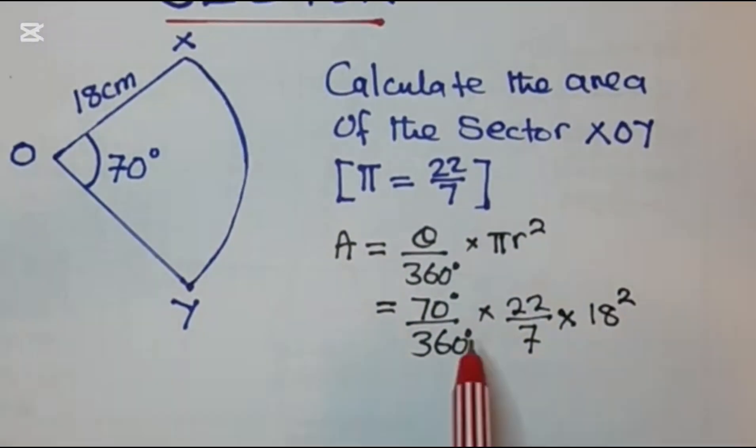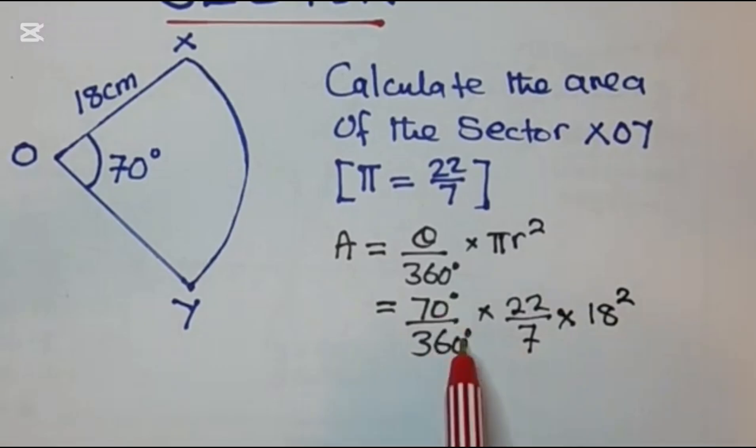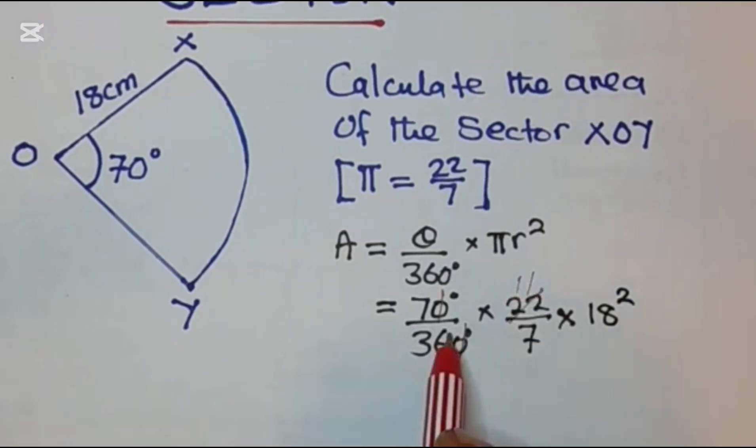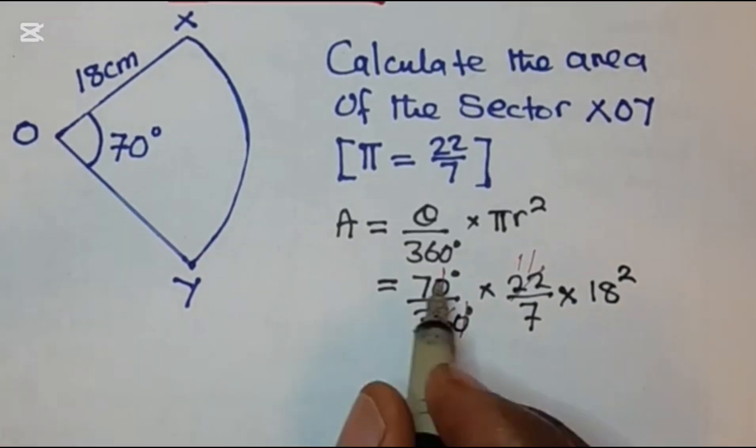At this stage we can simplify things. So 70 and 360 is dividing, so we have 7 over 36. Again, 2 can go into 22 eleven times, then 2 can go into 36 eighteen times.